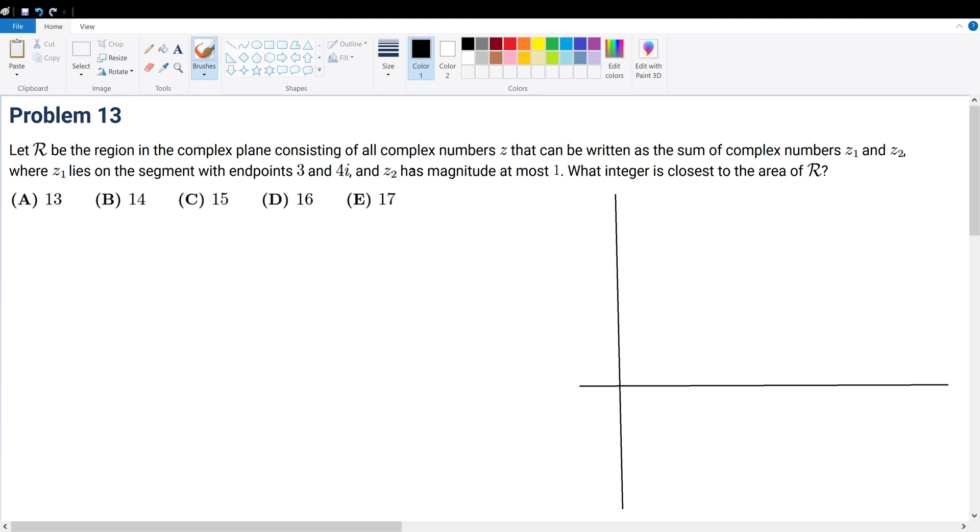Problem 13: Let R be the region in the complex plane consisting of all complex numbers z that can be written as the sum of two complex numbers z₁ and z₂. We're told that z₁ lies on the segment with endpoints 3 and 4i, and we're trying to find, with z₂'s magnitude being at most 1, the integer value closest to the area of R.